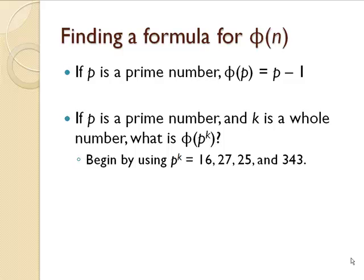Now let's think about if p is a prime number and k is a whole number, what is phi of p to the k power? I'd like for you to use a few examples: 16, 27, 25, and 343 fit this pattern, being 2 to the 4th, 3 to the 3rd, 5 squared, and 7 to the 3rd power.